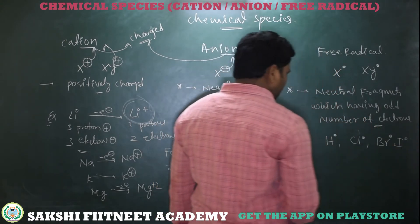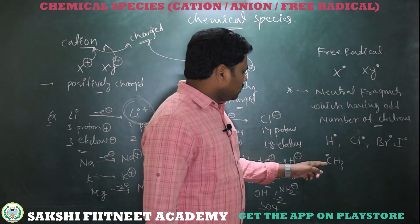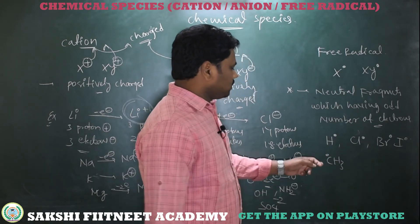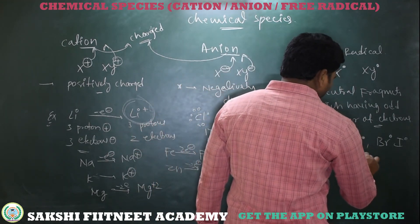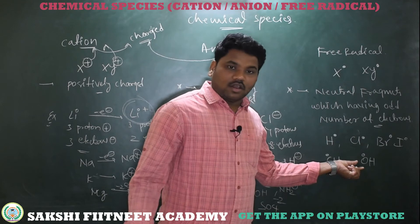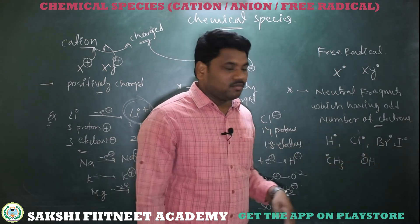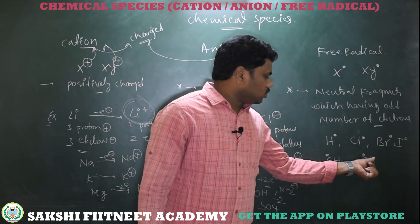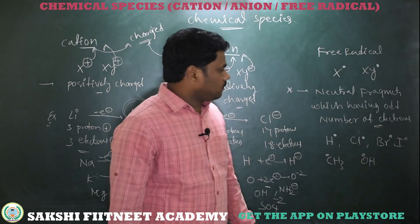You can also write iodine radical and CH₃ radical. Around this carbon we have three bond pairs — that is six electrons — plus this one electron makes seven electrons total, so this becomes a free radical. For OH radical: oxygen has two lone pairs and one bond pair participating in the chemical bond with hydrogen, giving one bond pair. Here we have one unpaired electron — that is called a free radical.